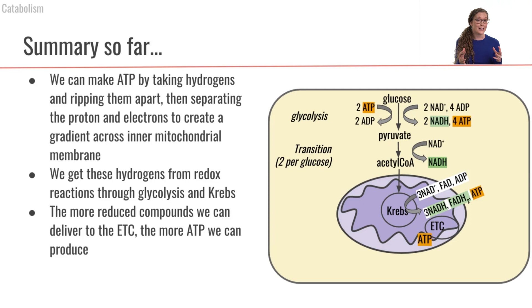Now when you think about it, the more reduced compounds we can make, the more NADHs, the more FADH2s, the more ATP we can synthesize across the electron transport chain. So keep that in mind as we move forward and talk about catabolic reactions of other macronutrients.